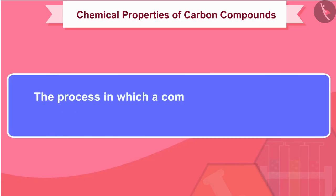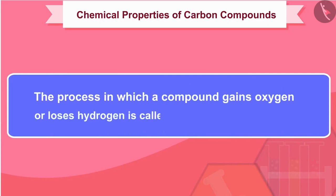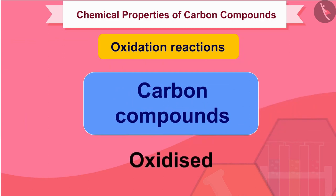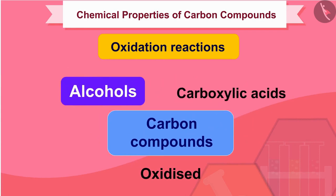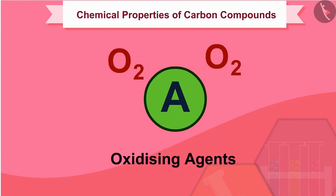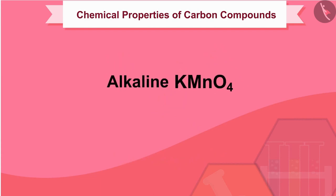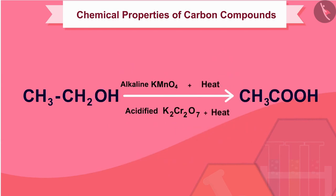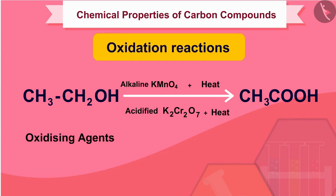The process in which a compound gains oxygen or loses hydrogen is called an oxidation reaction. Carbon compounds can be easily oxidized on combustion. In addition to complete oxidation, we have reactions in which alcohols are converted to carboxylic acids. Some substances are capable of adding oxygen to others — these are known as oxidizing agents. Alkaline potassium permanganate or acidified potassium dichromate are oxidizing agents that oxidize alcohols to acids by adding oxygen to the starting material.